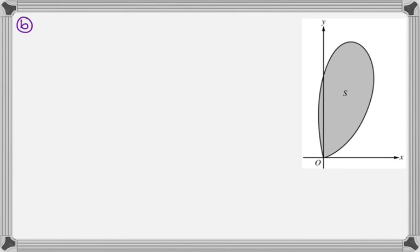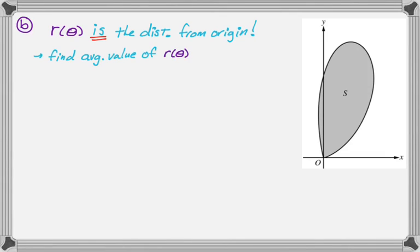Let's take a look at part b. The question in part b is, what is the average distance from the origin to a point on the curve when you're between zero and radical pi? So the key thing here is to realize that r of theta is the distance from the origin. So this question is effectively just asking us to find the average value of r of theta on this interval.